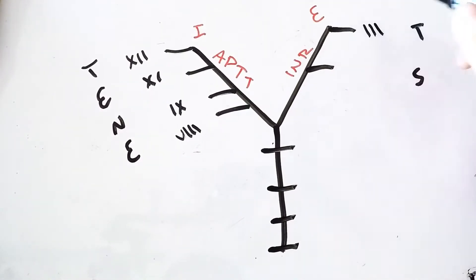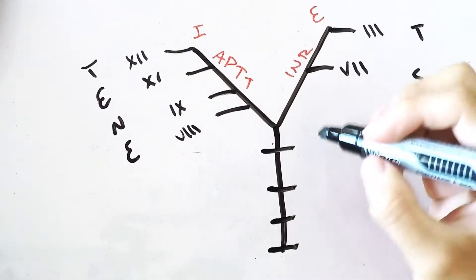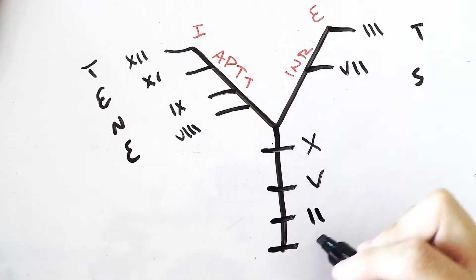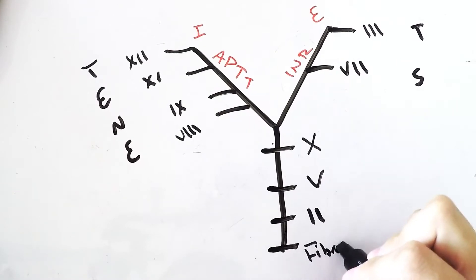T over here is going to be 3, and S over here is going to be 7. Once you have your common pathway you know that it's going to be 10, 5, 2, and then your last one being your fibrinogen.